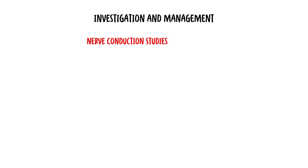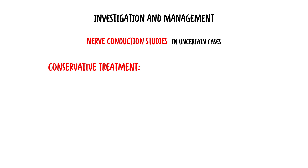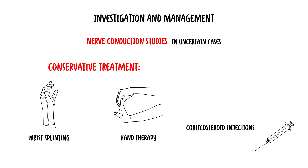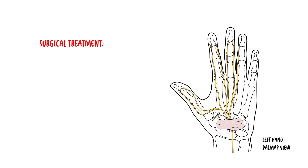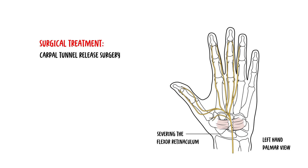Investigations and management: while the diagnosis of carpal tunnel syndrome is primarily clinical — using history, signs, and clinical examination — nerve conduction studies can aid in confirming median nerve damage in uncertain cases. First-line therapy is conservative management, including wrist splinting and hand therapy, with corticosteroid injections and anti-inflammatory drugs being optional in certain situations. Surgical treatment is reserved for cases unresponsive to conservative measures; carpal tunnel release surgery involves severing the flexor retinaculum to alleviate median nerve compression.